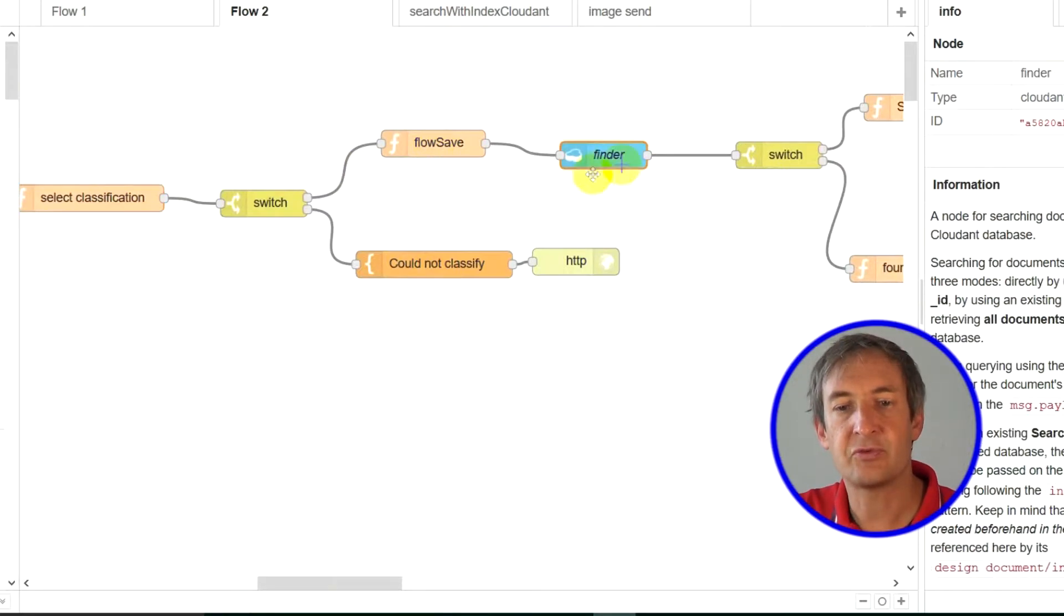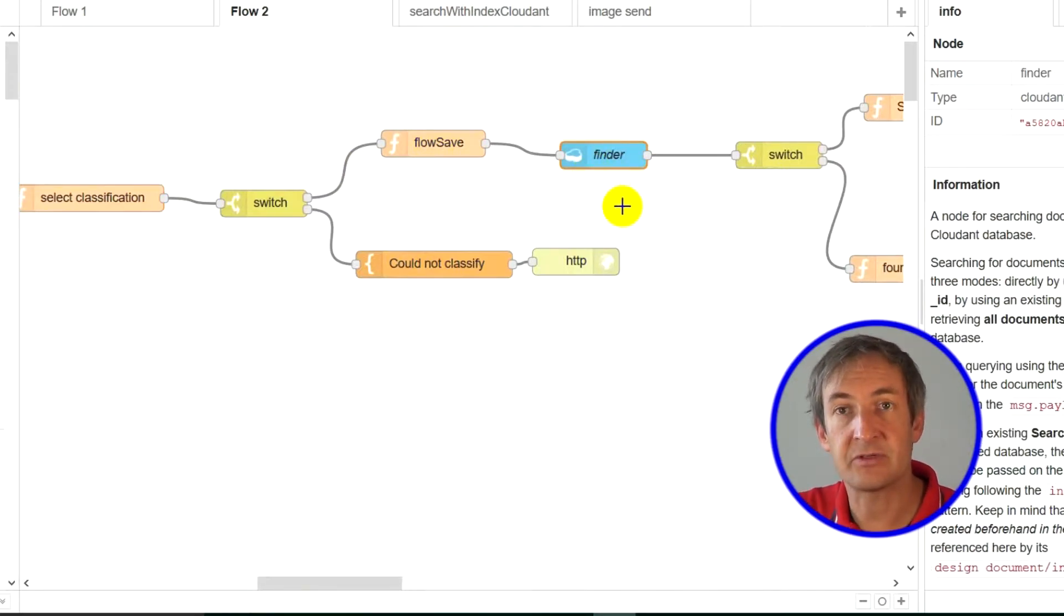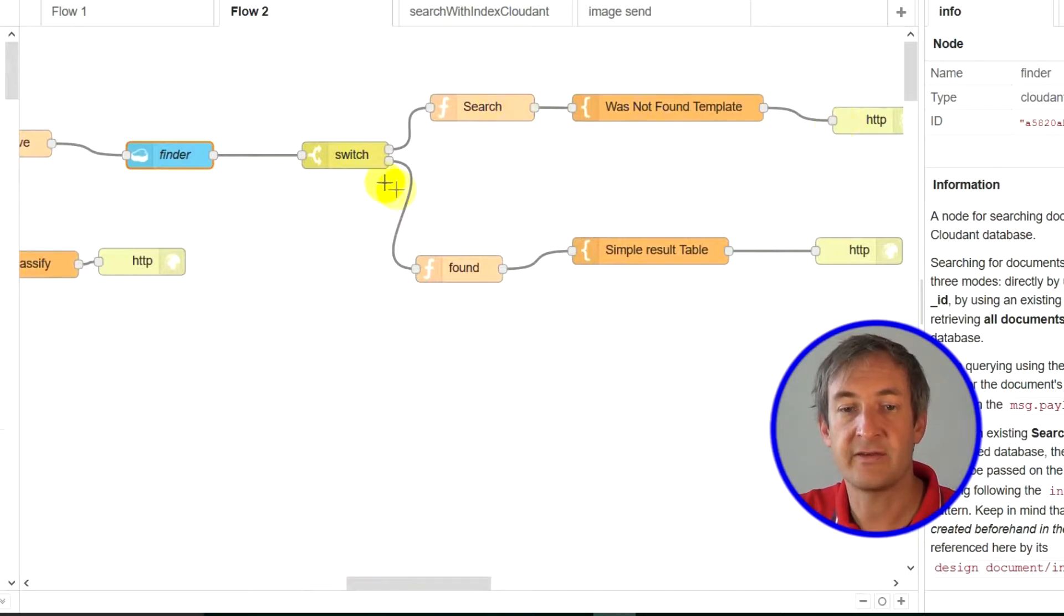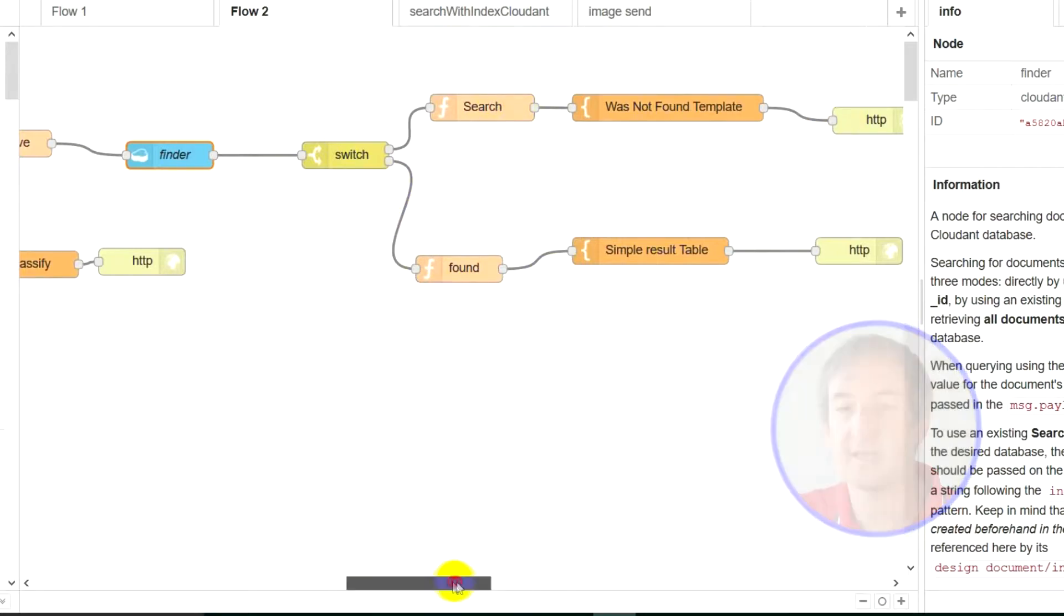If we did find, then I would go to the database, the Cloudant database, and see if we have an entry for that classification. And here, if we did not find it, we go there. If we did find, we go here. And that's it.